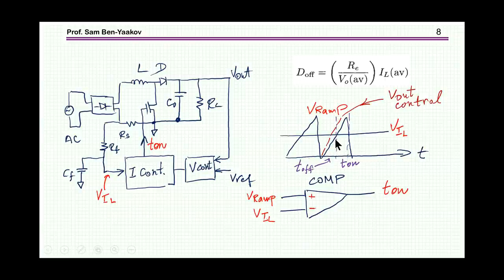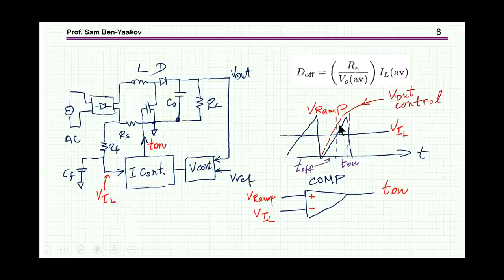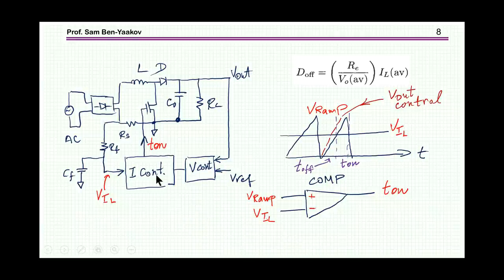The slope of this ramp is actually determining this constant, so this outer loop will change the slope if required in order to adjust the current level. So what we have to do is have a comparator, feed a ramp to one input, the low frequency component of the inductor current to the other input, and generate t_on — and this is all that we need in order to control this stage and make it an active power factor correction stage.